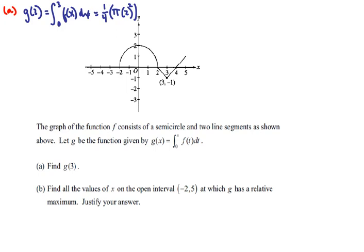Then after that we have a piece of area that is below the x-axis that has a width of 1 and a height of negative 1. And so that is going to be negative 1 half. And so g of 3 is going to be pi minus 1 half.